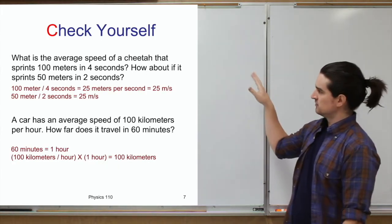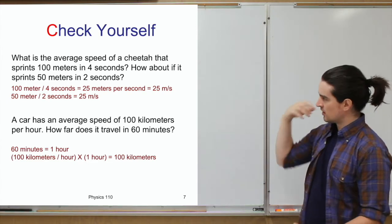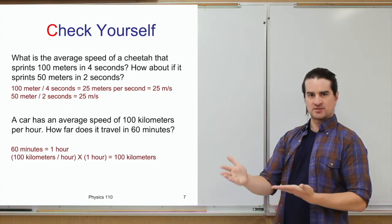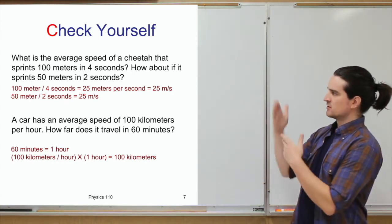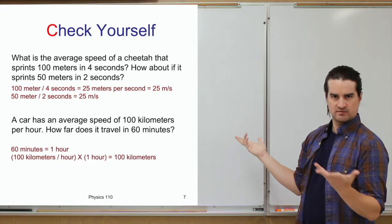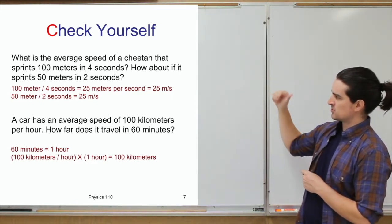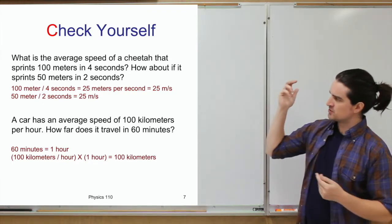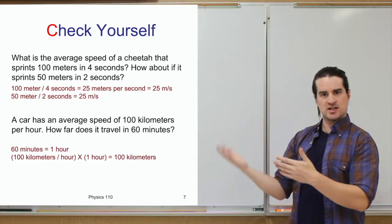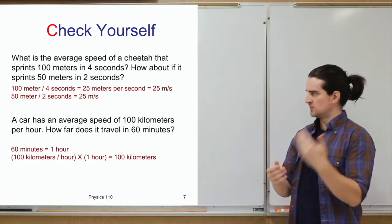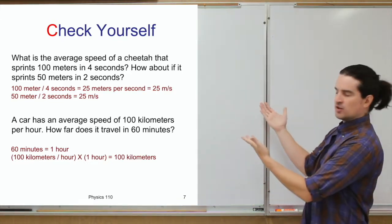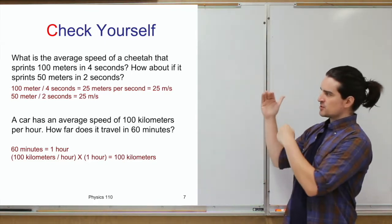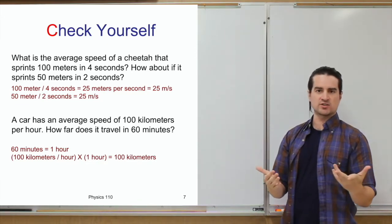For the first question: if the cheetah has gone 100 meters in four seconds, that's 100 meters divided by four seconds, which equals 25 meters per second. What if it goes 50 meters in two seconds? That's 50 divided by two — still 25 meters per second. So even with different measurements, you can get the same speed.